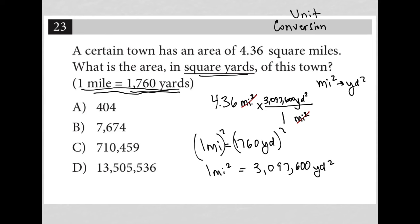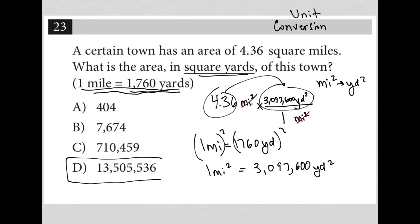Now that I've settled that, all that's left is to multiply these two values by each other. And honestly, when I look at the answer choices, it's only one obvious answer this could be. But if you want to confirm, you can multiply 4.36 times 3,097,600. And yes, we get 13,505,536.